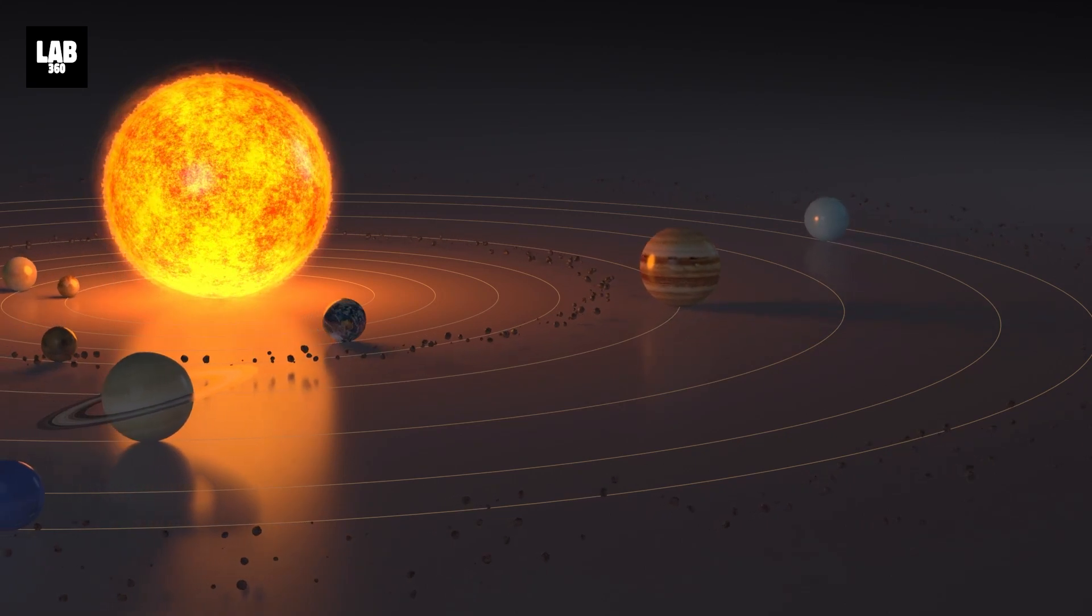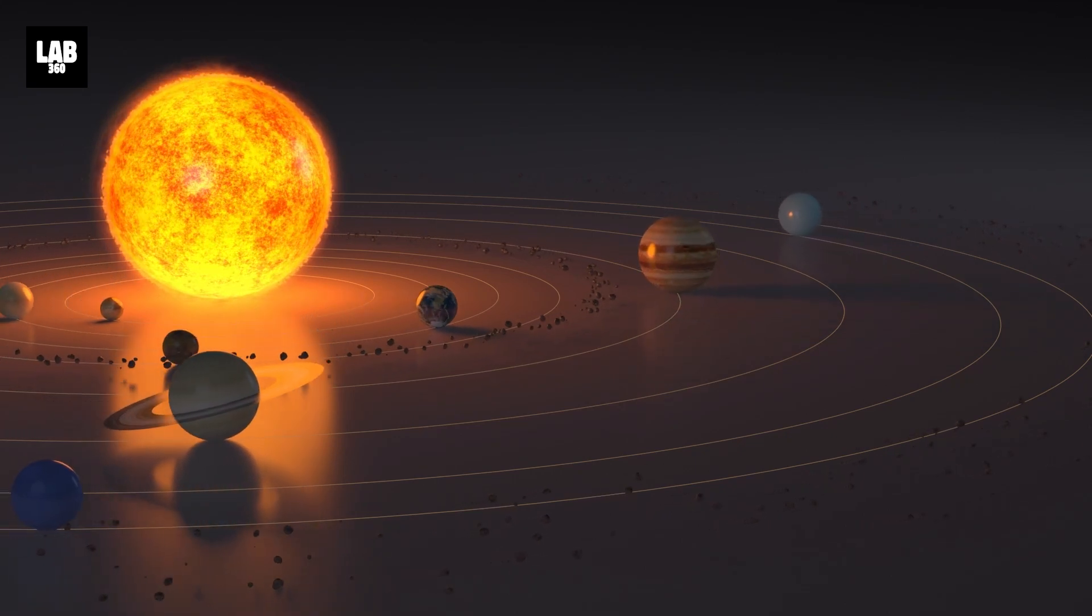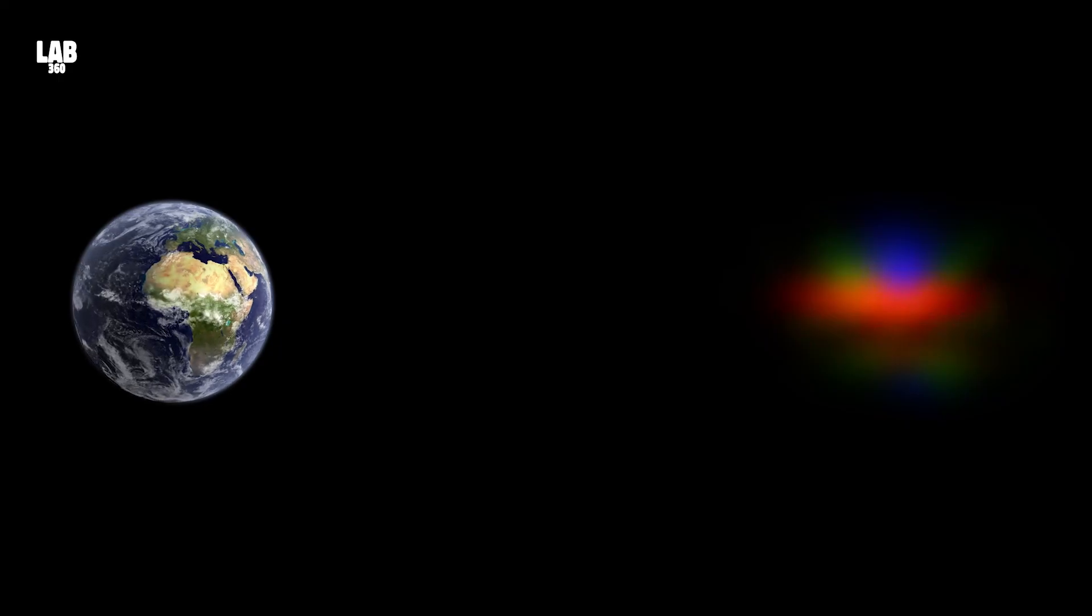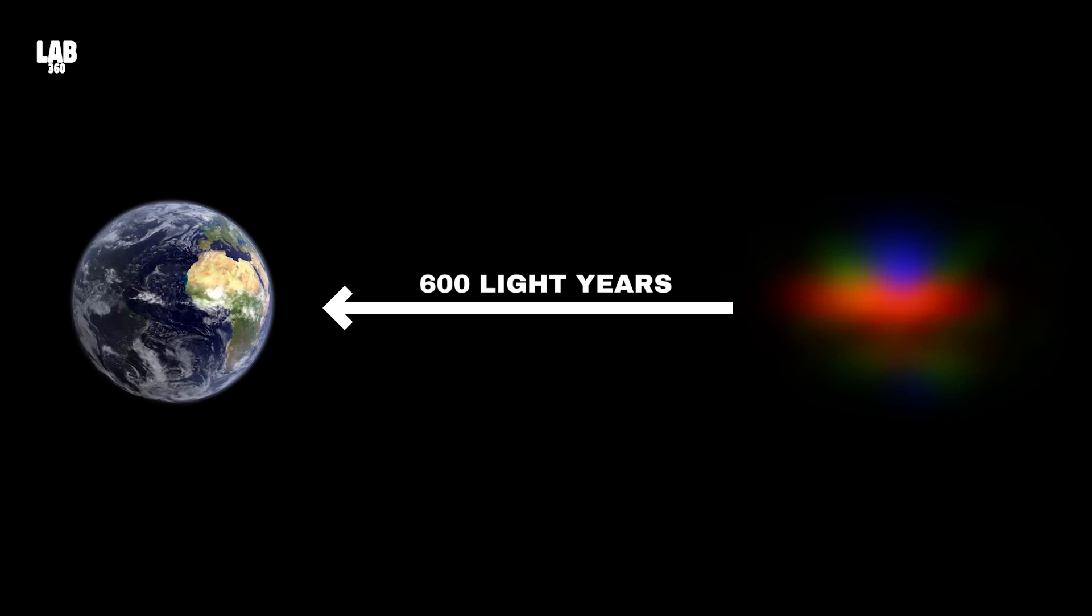The star, named HH48NE by astronomers, is in a traversing mode with the planet-like disk towards the space telescope. The star is nearly 600 light-years away from Earth.